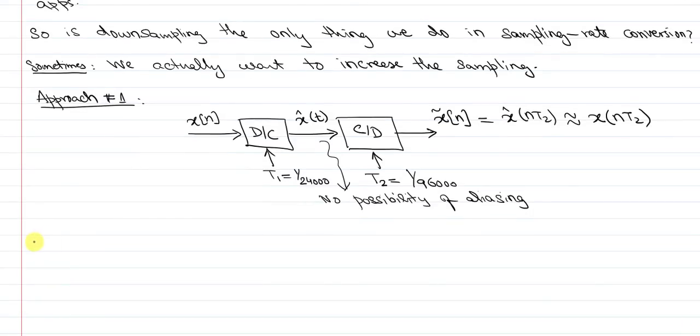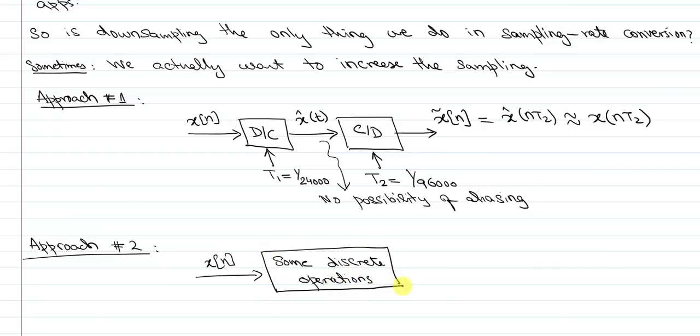So that is approach one to increase the sampling rate. Approach two is that I take my input signal, I do some discrete operation, and I get back the same result that I would have gotten using approach number one.